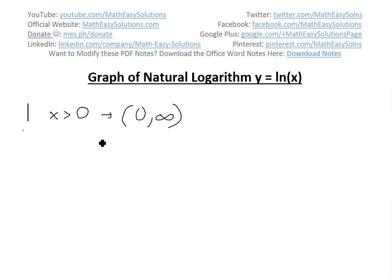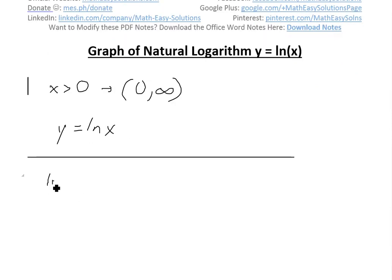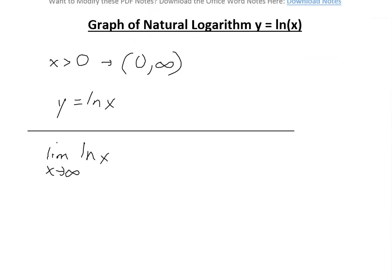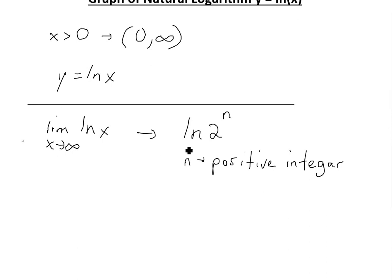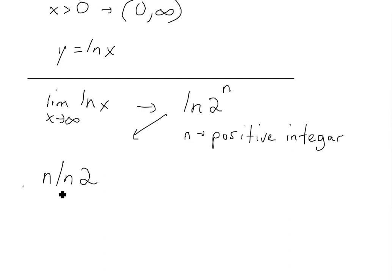To understand y equals ln of x, we need to find the limits at infinity and negative infinity. First, let's look at the limit as x approaches infinity and what value we get for ln of x. To get this idea, we look at ln of 2 to the power of n, where n is any positive integer.